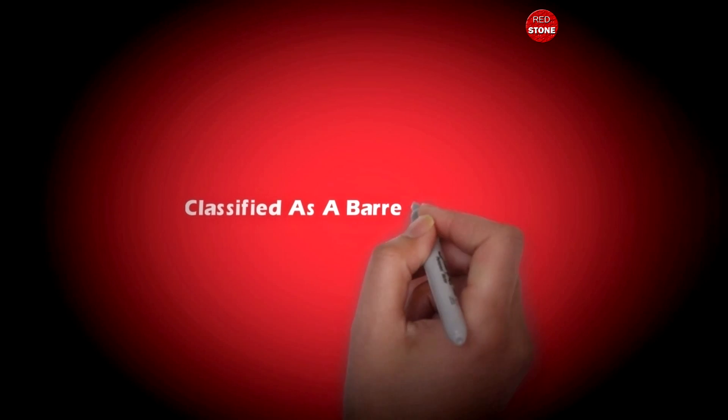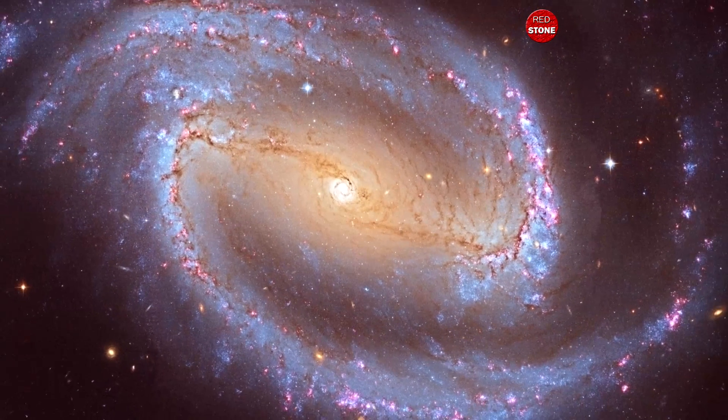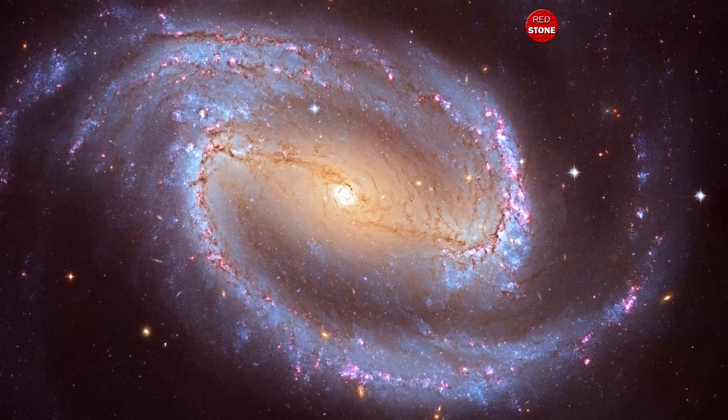15. Classified as a Barred Spiral Galaxy. The Milky Way is a spiral-armed galaxy, and as is typical for about 67% of those, ours is barred.